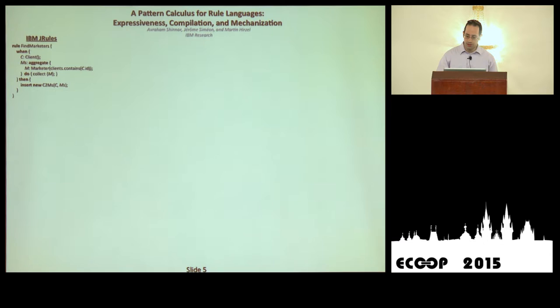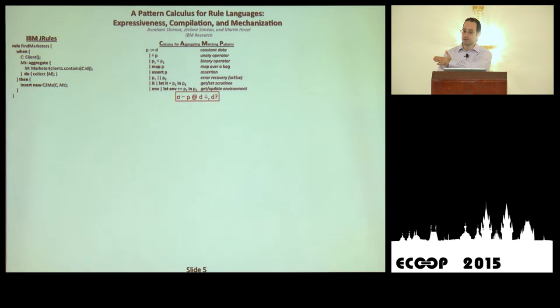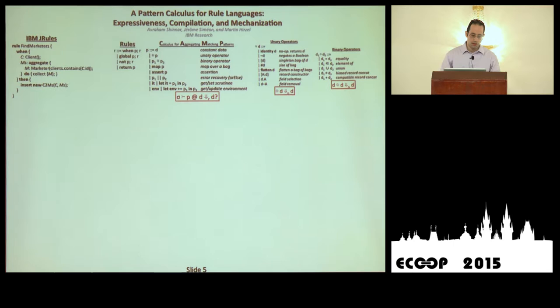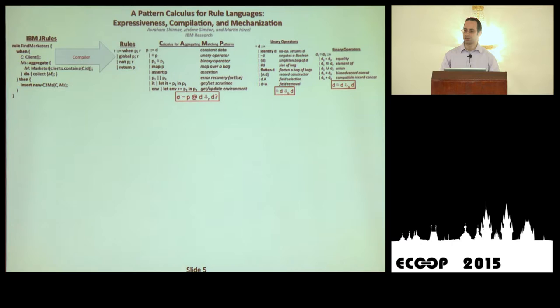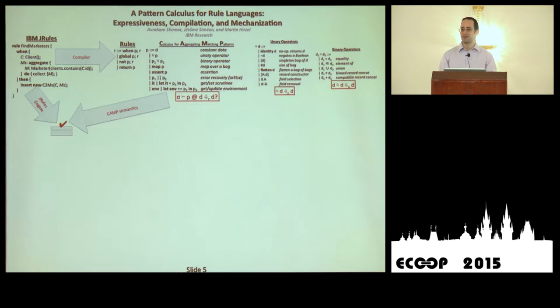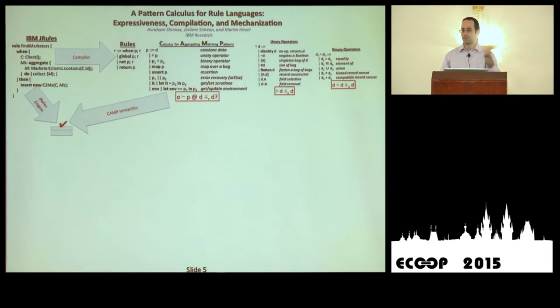To summarize: we have the JRules language that already exists, and we introduced CAMP, our language to model it, along with a bunch of operators, and a rule language on top to make it easier to go between them. What we want to do now is compile JRules — or at least a reasonable subset — into our rule language. We verified correctness using unit tests: we run examples on the existing JRules engine and also compile them using our interpreter, then verify both give the same answer.